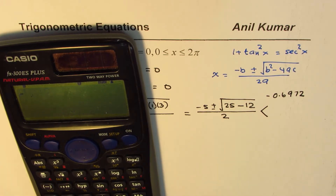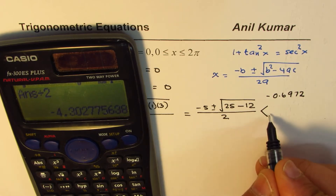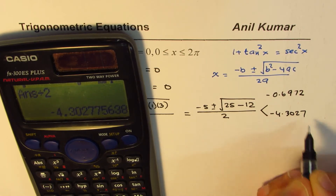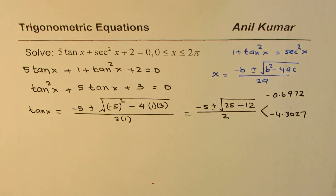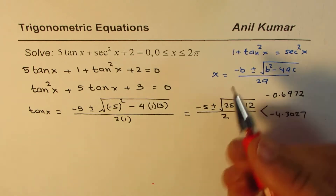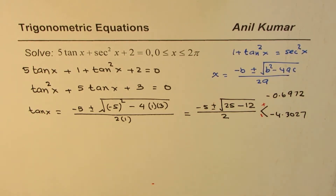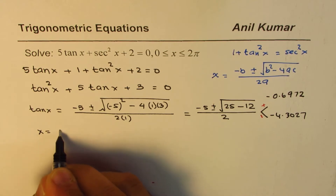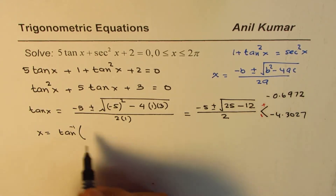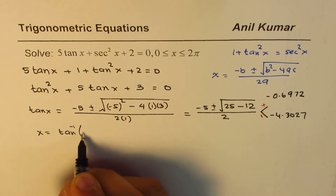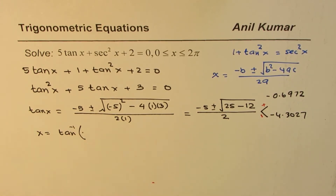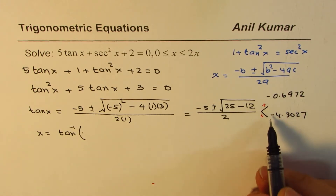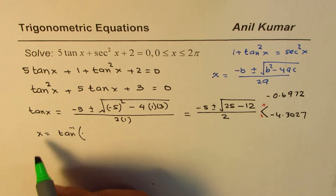The other value is tan(x) = (−5 − √13) / 2 ≈ −4.3027 — we are taking four decimal places in this example. Both answers are negative, so we need to determine which quadrants to use for x in the domain 0 to 2π.